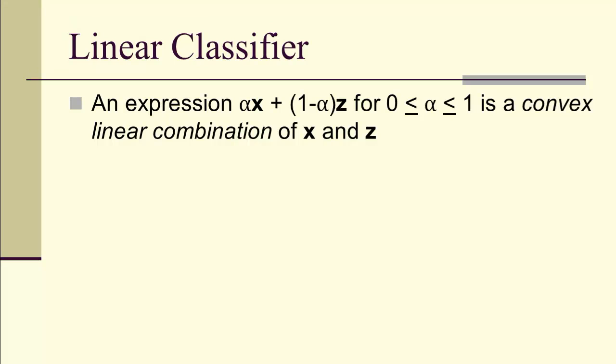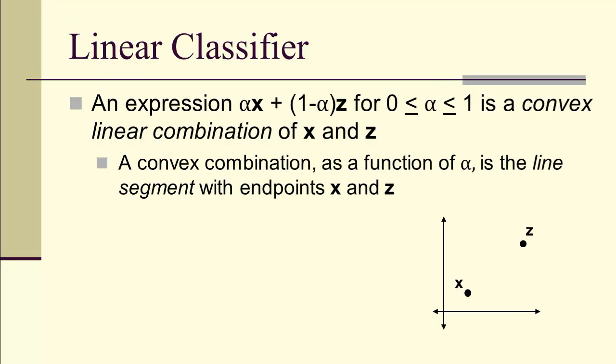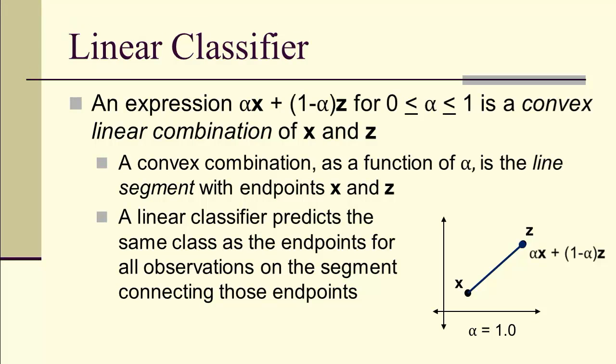This expression alpha x plus 1 minus alpha z, this special linear combination, is called a convex linear combination. A convex combination is actually the line segment between the endpoints x and z. We can see that if we start at x and go to z, that corresponds to changing alpha from 0 to 1. What we've shown is a linear classifier predicts the same class for the intermediate points as for the endpoints. If the endpoints are in the same class, then all points in between are also in the same class on that line segment.